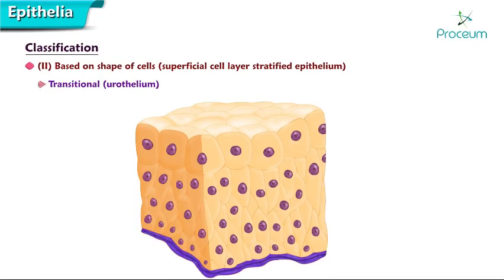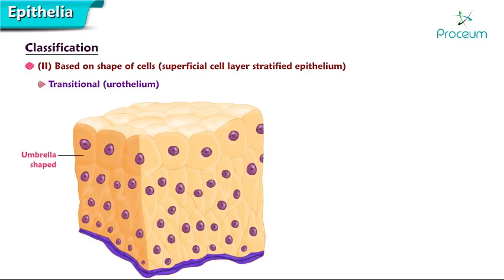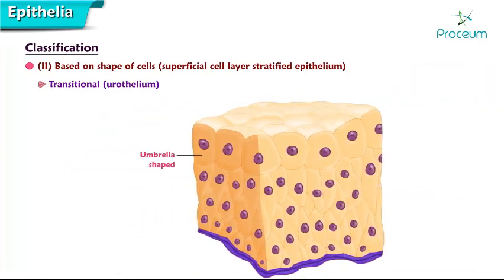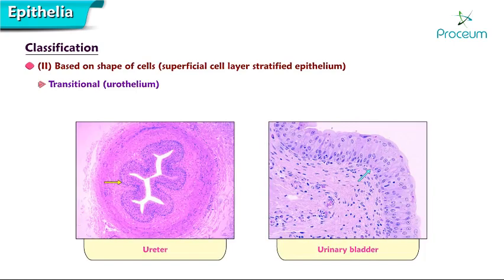Transitional epithelium, or urothelium, is a multi-layered epithelium four to six cells thick. The cells of the superficial layer are large and umbrella-shaped, giving a scalloped margin to the luminal surface. It differs from stratified squamous epithelium in that surface cells are not squamous; the deepest cells are columnar or cuboidal, and the middle layers are made up of polyhedral or pear-shaped cells. Occurrence is in the ureter and urinary bladder. Function is protection.